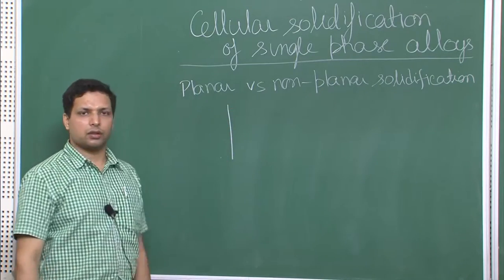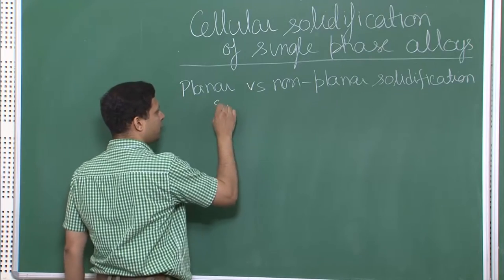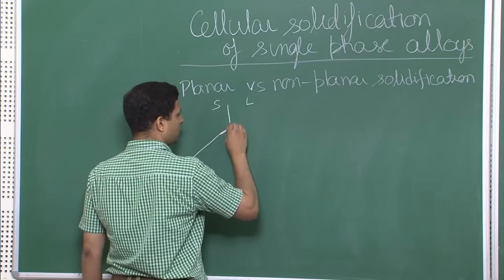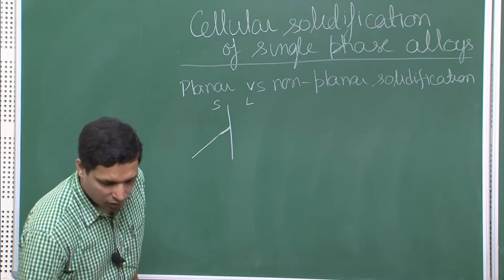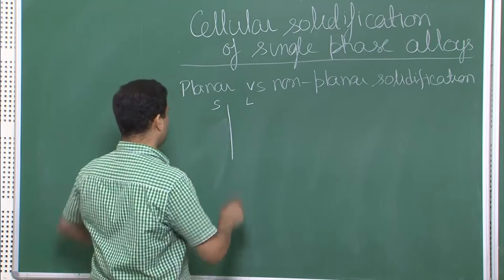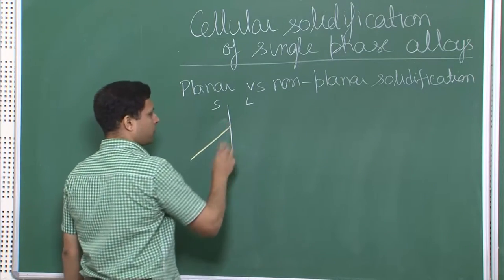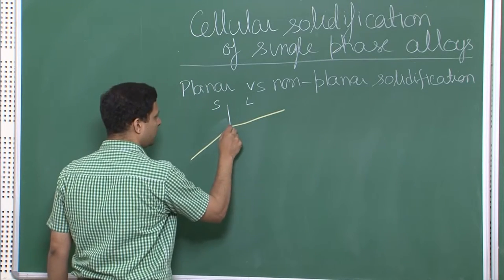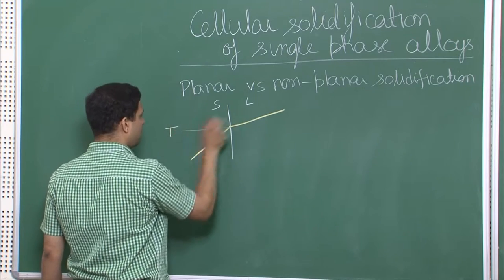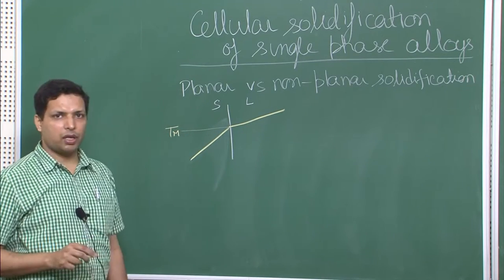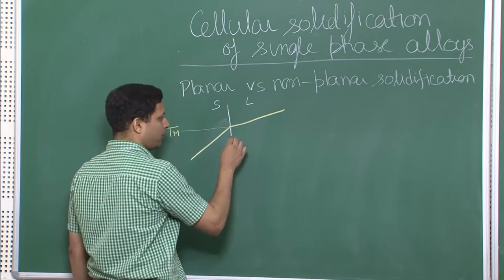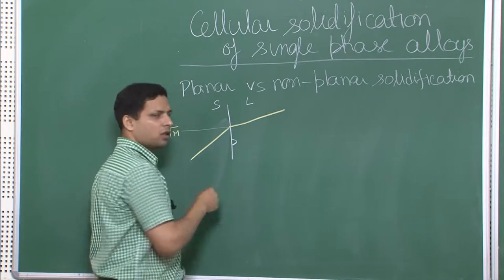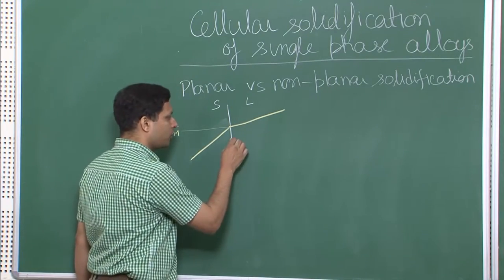Let us say this is the interface between solid and liquid — this side is solid, this side is liquid. This is the temperature profile in the solid and the temperature profile in the liquid. At the interface the temperature is somewhere very close to T_m, the melting point. Now let us say that a protrusion occurs on the solid — because of some random fluctuation a small protrusion grows.